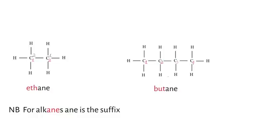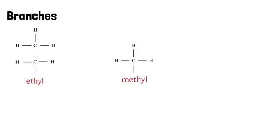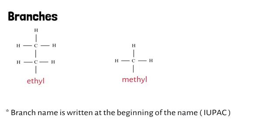Before the next structure, let's look at branches. On step one we consider the longest chain, but we do get cases where other chains exist in a structure — those other chains become branches. There are two branches to know: the ethyl branch has two carbon atoms, and the methyl branch has one carbon atom. The branch name is always written at the beginning of the IUPAC name.